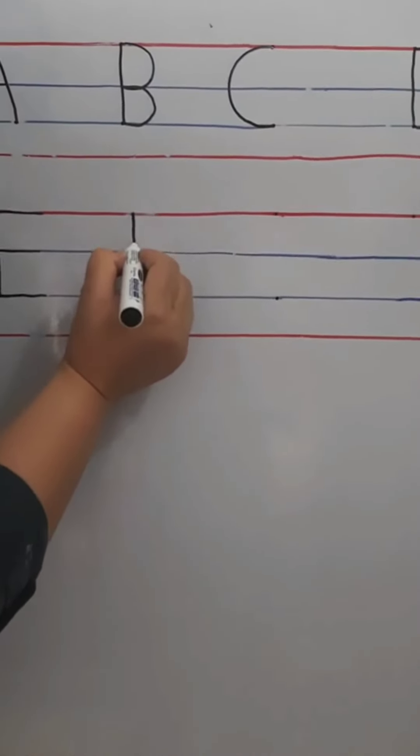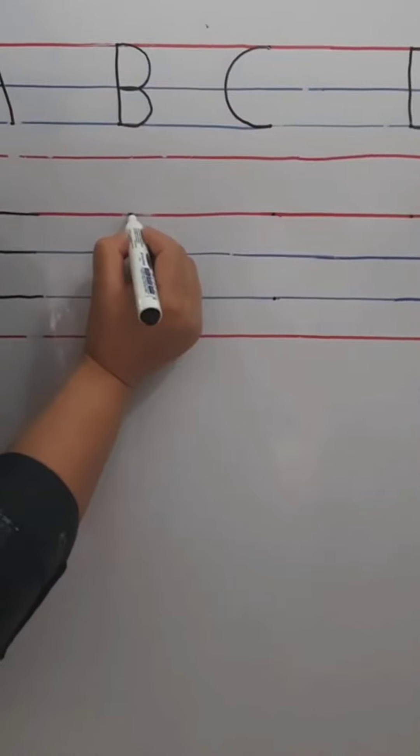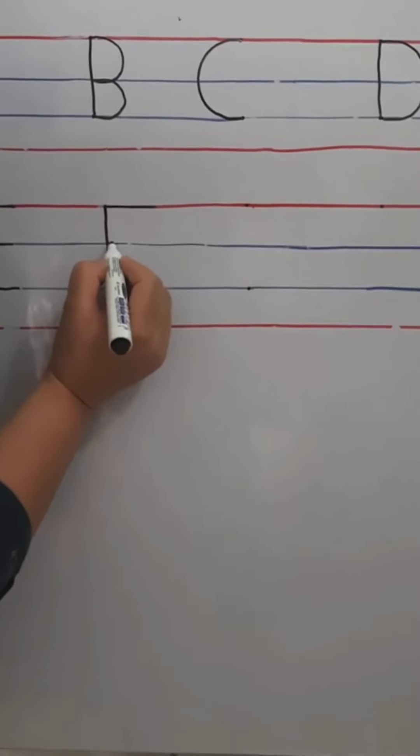For F, standing line. One sleeping line. And two sleeping lines.